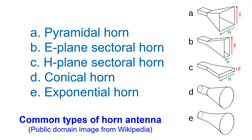Horn antennas give a gradual change in impedance from the waveguide to free space. Otherwise, a sudden change in impedance could lead to reflection of significant amounts of wave energy back to the source through the waveguide, causing standing waves and overheating of the final stages. Minimum reflection of power can be obtained with an exponential taper of the horn shape, but they are more difficult to design and fabricate.